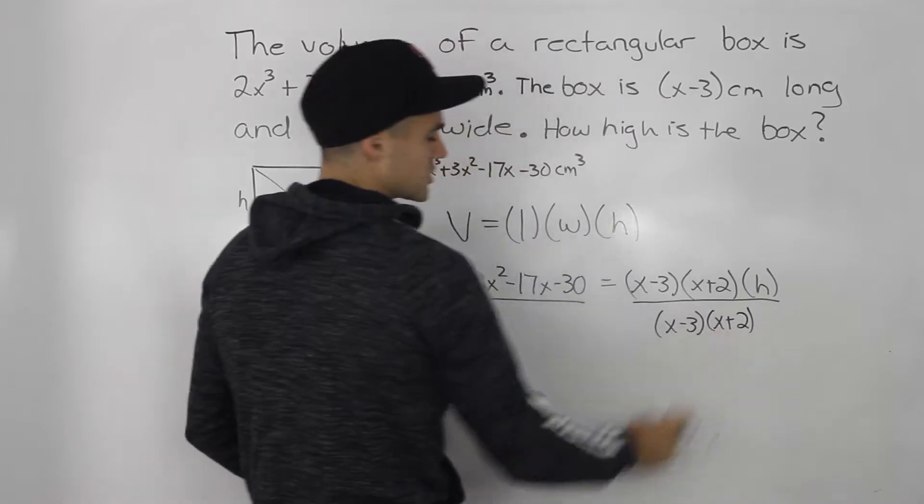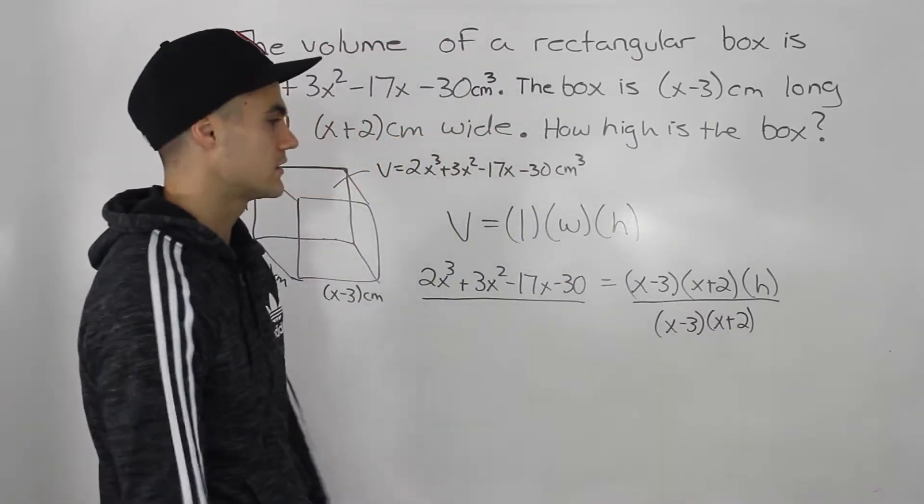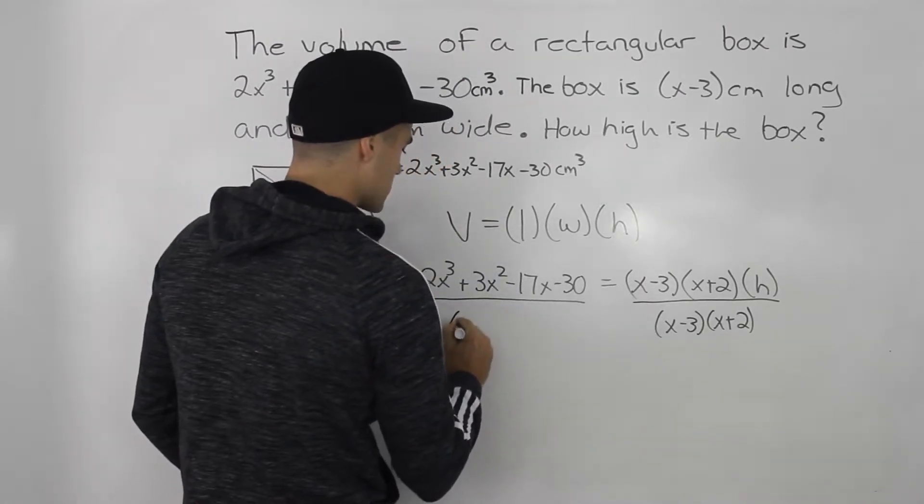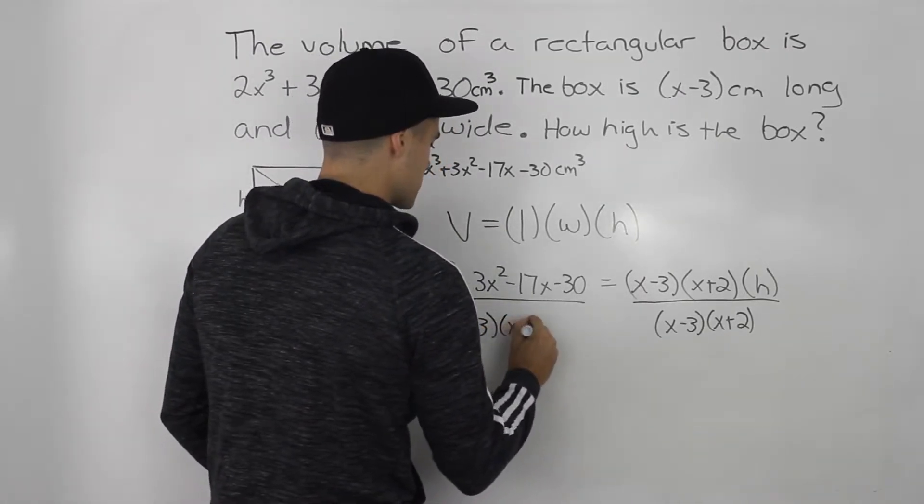You can include both expressions because they are multiplying each other. So what you do to one side, you've got to do to the other side. So this is (x-3), (x+2).